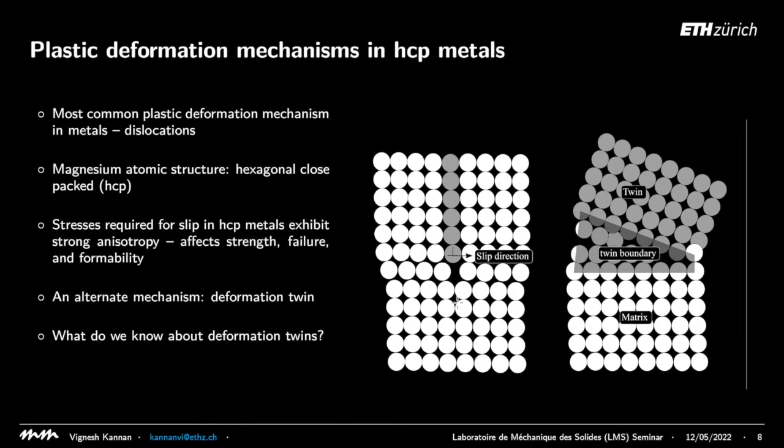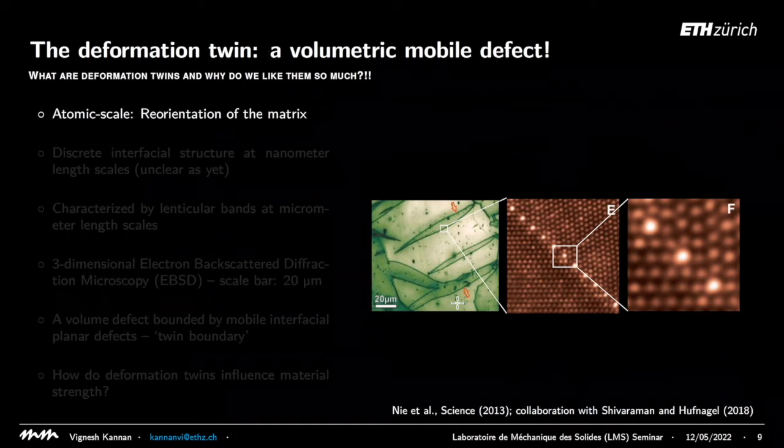A deformation twin is a reorientation of a crystal lattice — you can think of it as a shear of a volume of lattice with respect to a twin boundary. This is a volume defect. The question is how these twins, which are not commonly observed in cubic metals, affect the material strength of magnesium during plasticity.